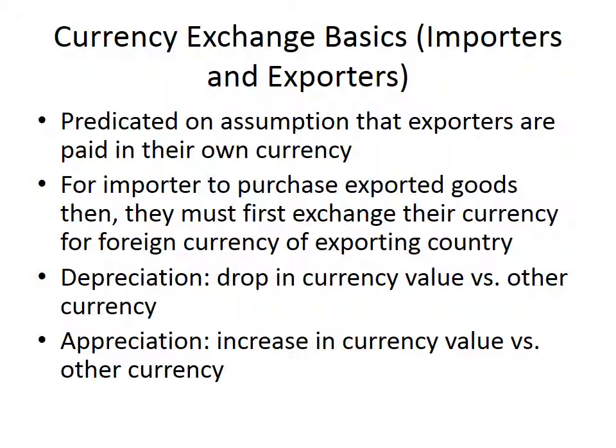One determinant of demand for a currency is predicated on this assumption: an exporter producing in the domestic market and selling overseas wants to be paid in their home currency. So U.S. exporters want to be paid in U.S. dollars, European exporters in euros. Chinese exporters want to be paid in yuan. That's not universally true — in the petroleum market, international oil is all bought and sold in dollars.